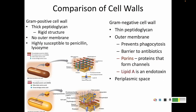In a gram-positive cell, the cell wall is nice and thick — several layers of sugars and proteins, making it very rigid. There is no outer membrane outside of it. This means the thick peptidoglycan is exposed and susceptible to things like penicillin and lysozyme, which can get right in, break down the peptidoglycan, and destroy the cell.